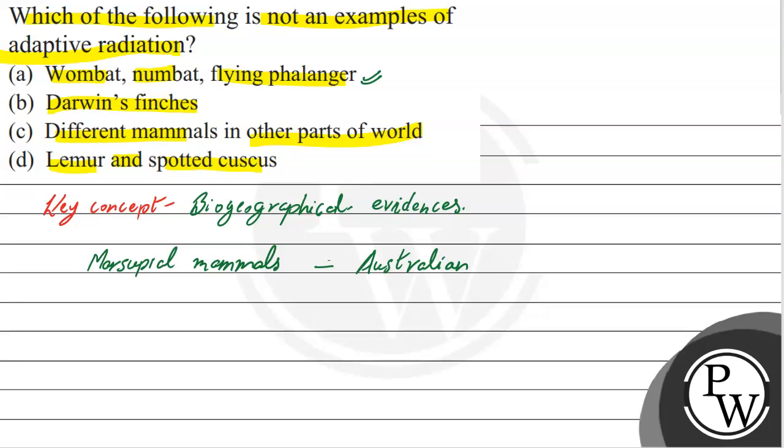Option B is Darwin's finches. Darwin's finches show different beak modifications - different beaks of birds with a common ancestor but different beak structures and different food habits.